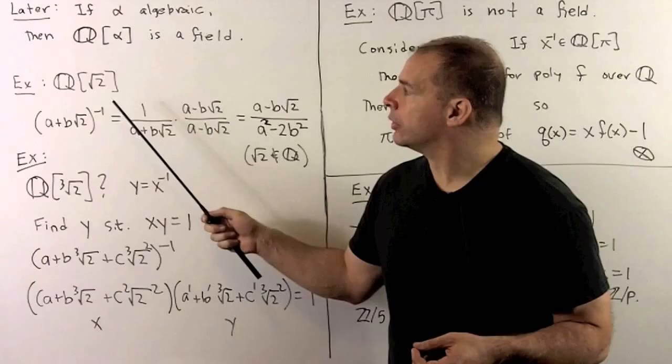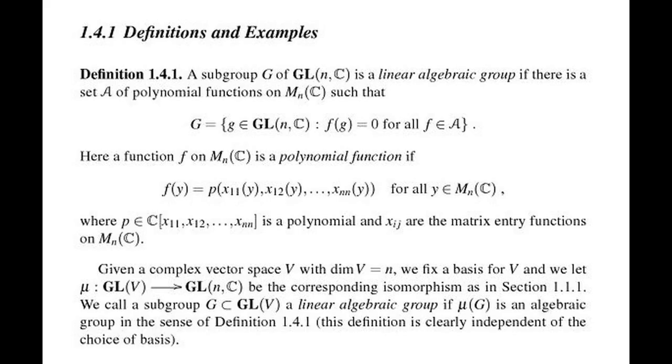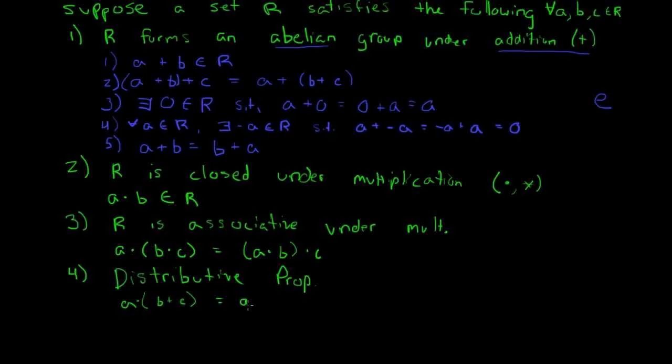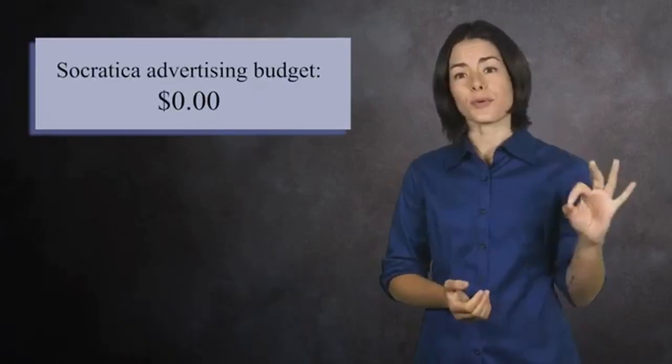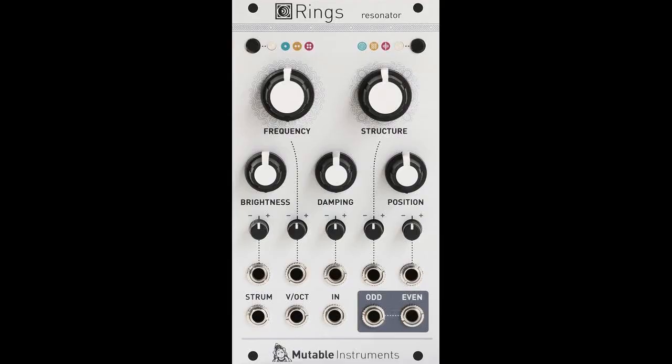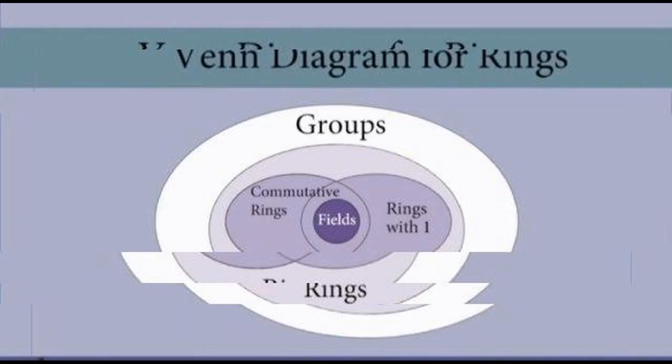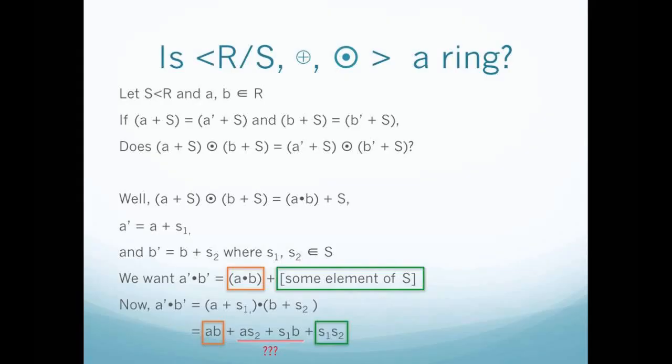If one is working with rngs, then the third condition is dropped. Given a ring and a two-sided ideal I of R, viewing I as a subgroup of R, then the quotient ring R/I is the set of cosets of I together with the operations (a + I) + (b + I) = (a + b) + I for all a, b in R. The ring R/I is also called a factor ring.